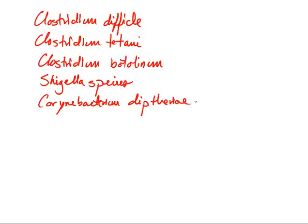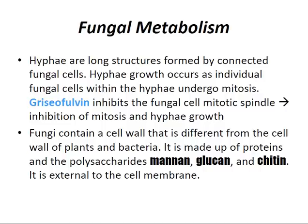Moving to fungal metabolism. Hyphae are long structures formed by connected fungal cells, and hyphae growth occurs as individual fungal cells within the hyphae undergo mitosis. Griseofulvin inhibits the fungal cell mitotic spindle, inhibiting mitosis and hyphae growth. Fungi contain a cell wall made up of proteins in the polysaccharide mannan, glucan, and chitin, external to the cell membrane.